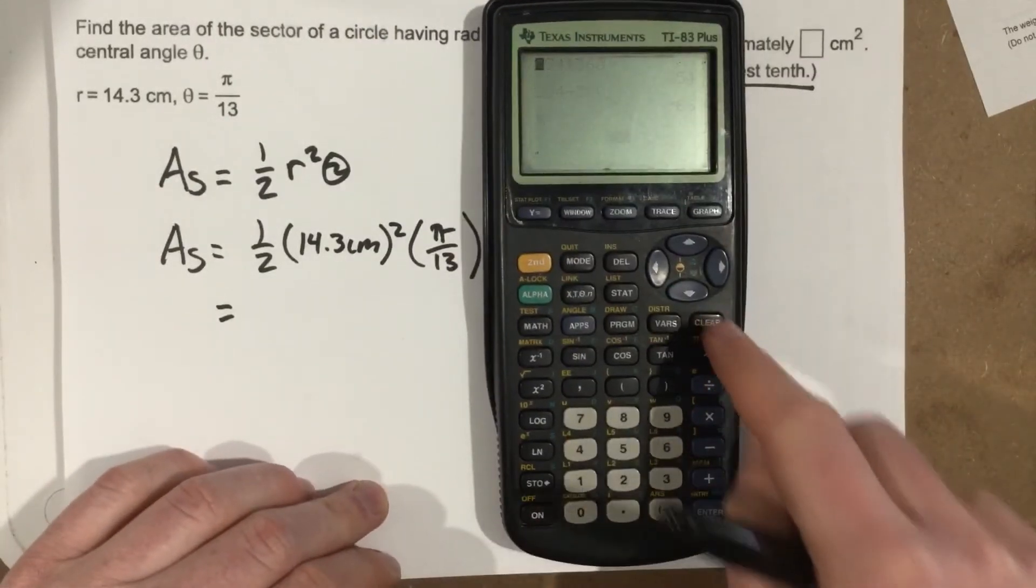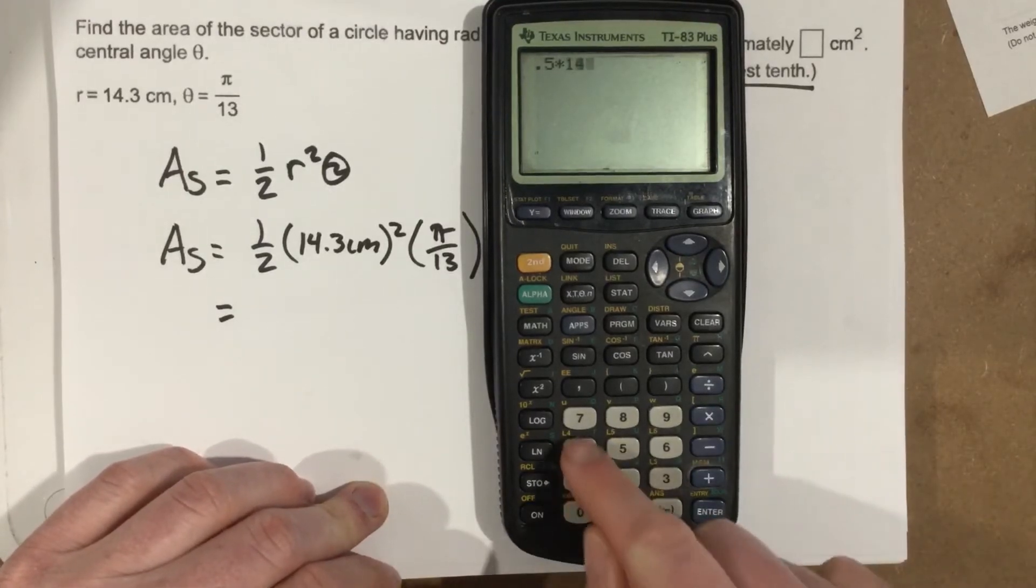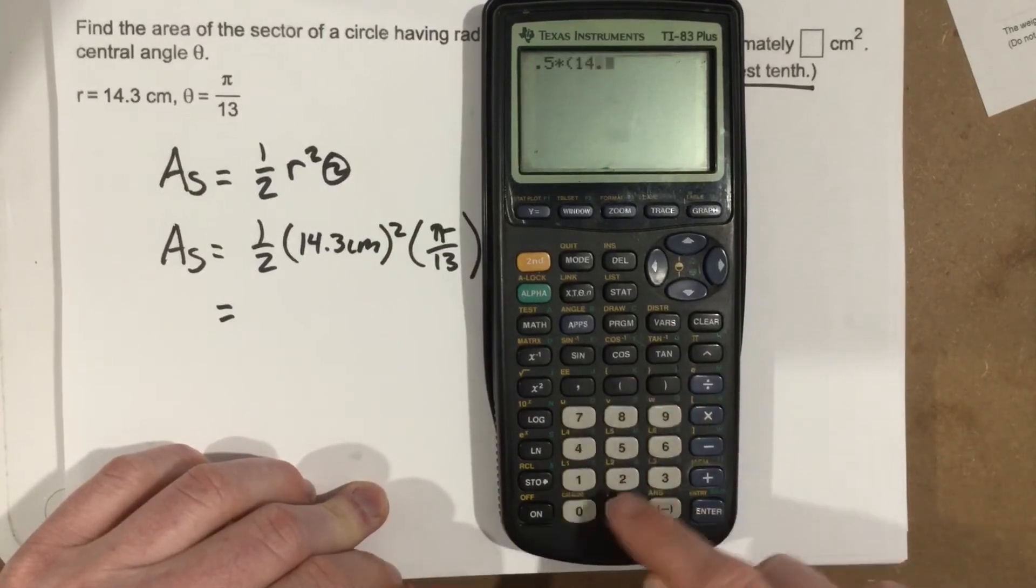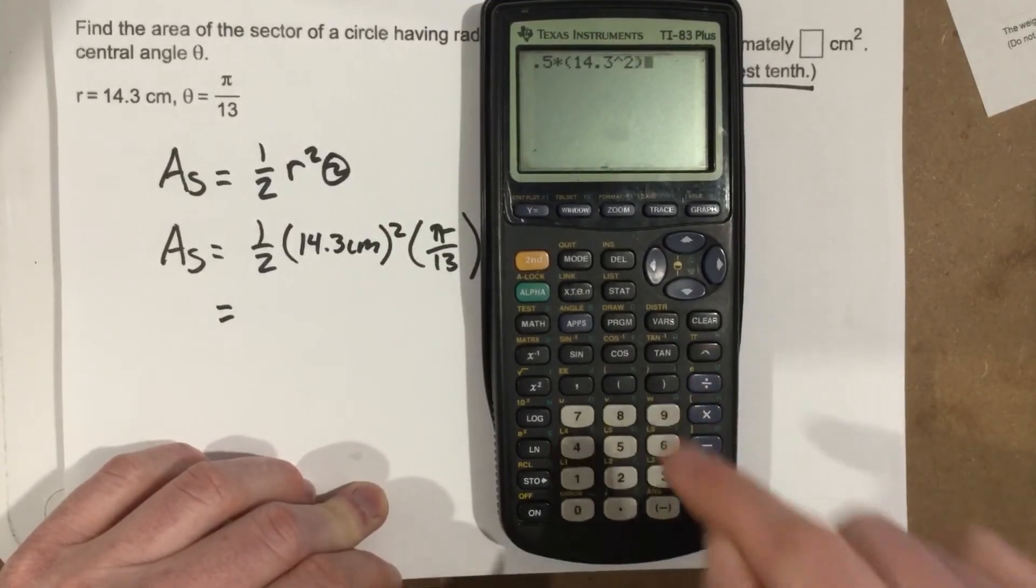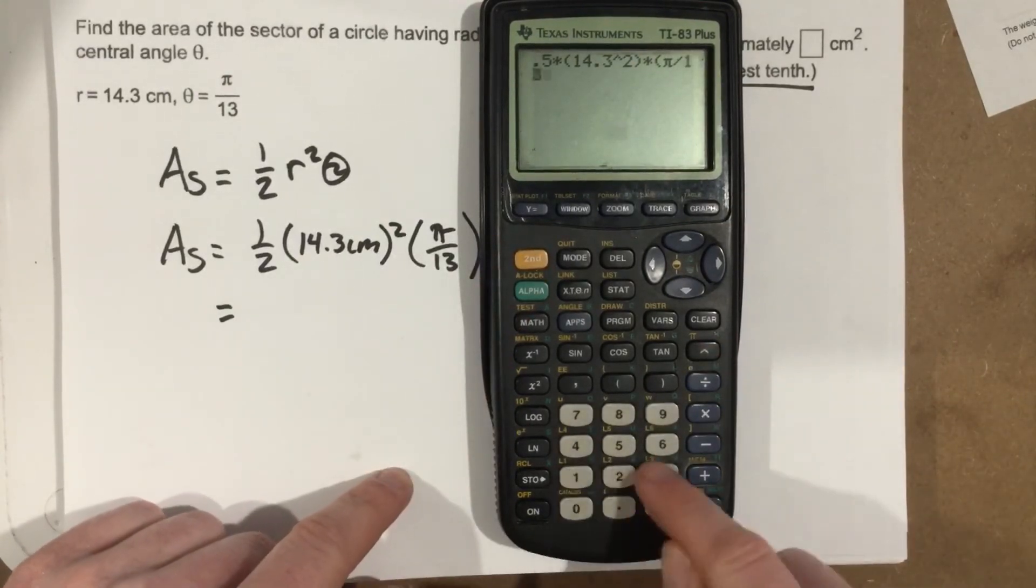So if I plug in 0.5 times—well, I better do that in parentheses—14.3 squared times pi divided by 13.